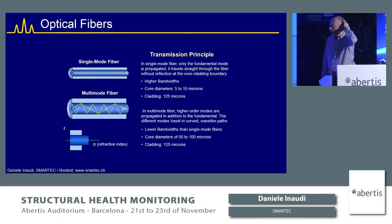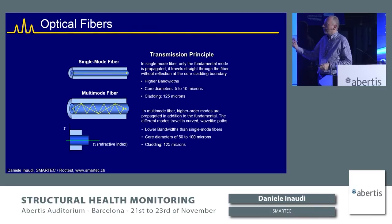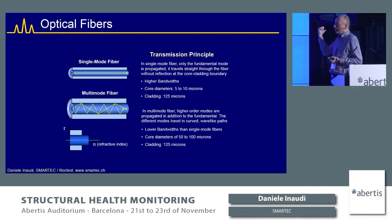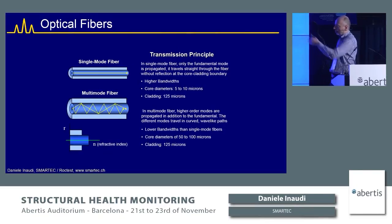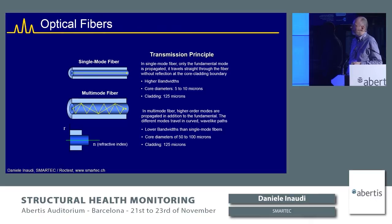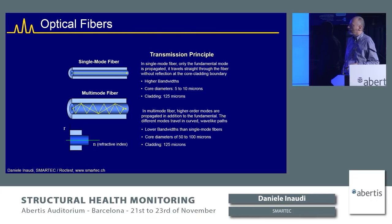The optical fibers we use are very similar or identical to those used for data transmission. The optical fiber is a glass wire that traps light inside it. When you put light at one end, it propagates into the fiber, reflected at the surface between the core and cladding. The fiber is typically about one eighth of a millimeter in diameter. We add external protections to make it easy to manipulate and install.